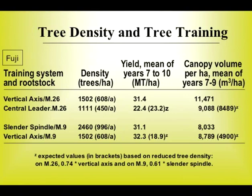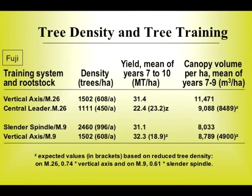Looking at canopy volume on the right, yes, the central leader trees did have lower canopy volume. But you'd almost think that a tree on Malling 26 by years 7 through 10 would have filled its space, and therefore initial tree density would not be so important anymore. My take is that the issue is not tree density in this case, and it's really not how the trees were trained — it's that the central leader did not have a support system. Trees on Malling 26 without support develop into a round-shaped tree; they do not grow tall and do not fill their space. The main factor was the lack of support rather than low tree density, and this illustrates that we must look at all the components to decide which are making the major contribution.